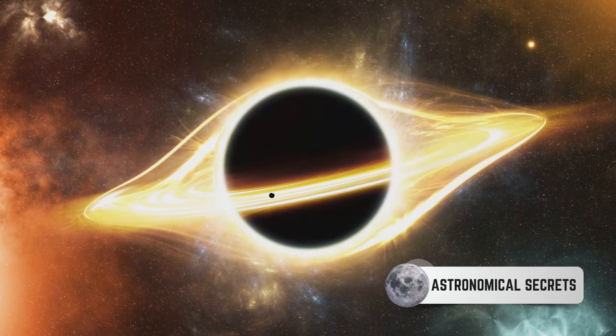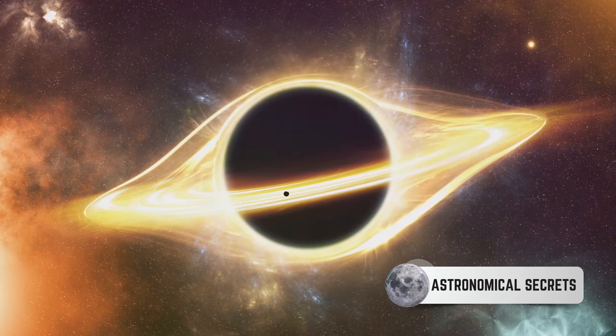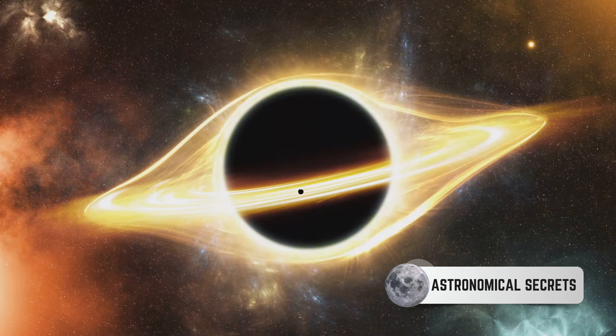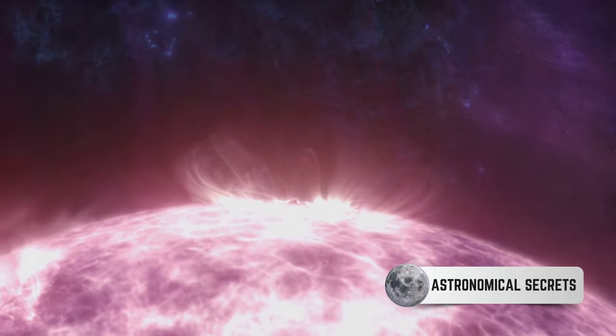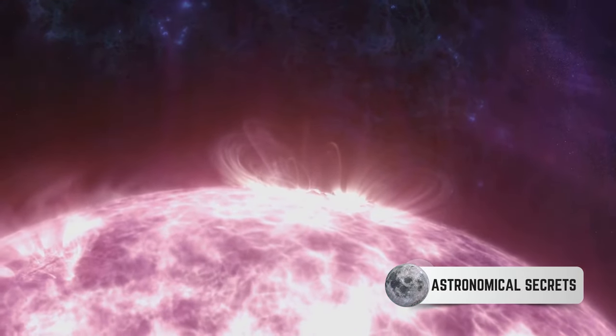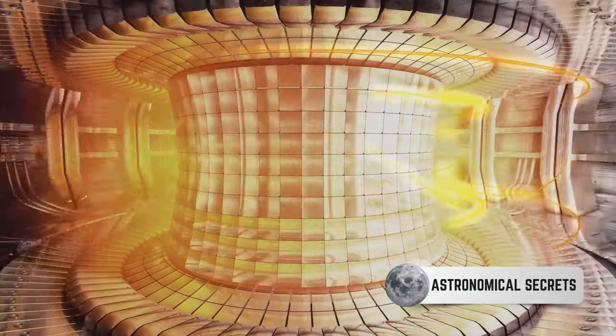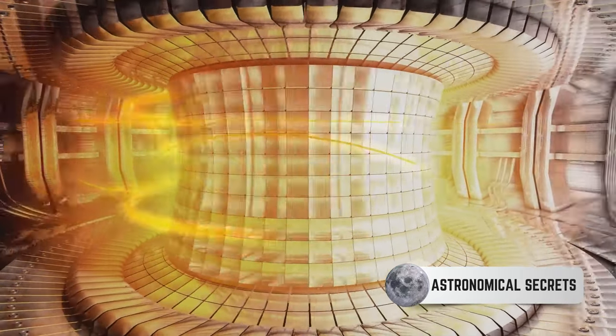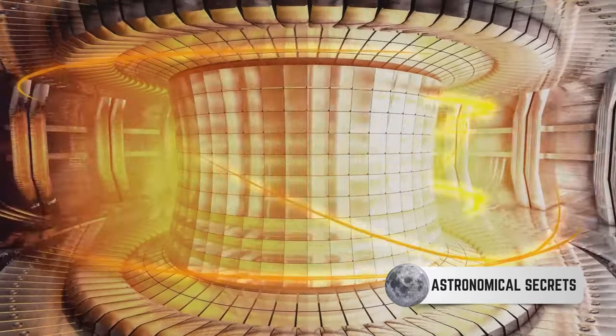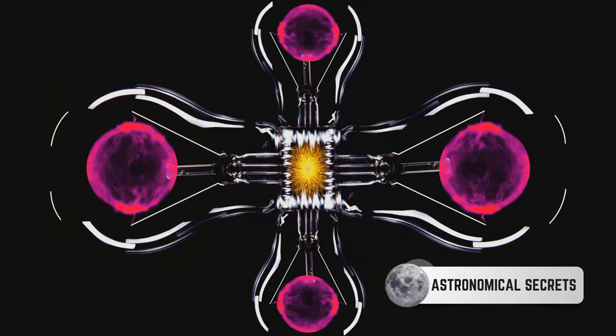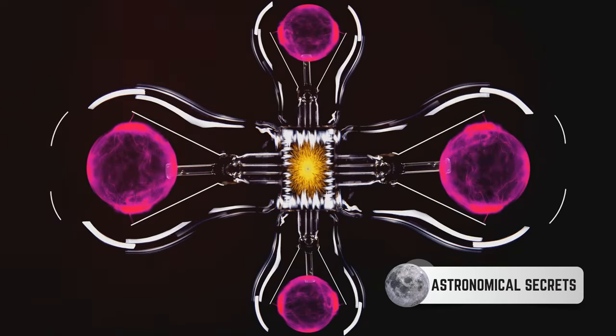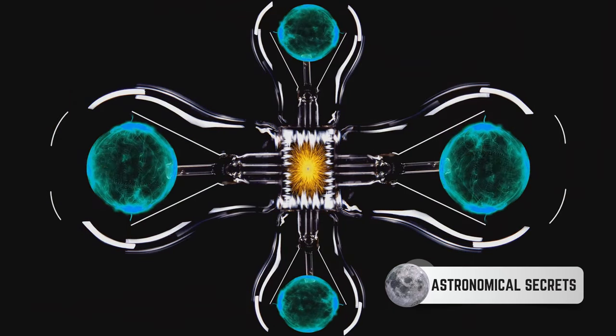For a star to evolve into a Wolf-Rayet star, it must be massive, at least 20 times the mass of our sun. These stellar giants burn through their nuclear fuel at a staggering rate, leading to a short and dramatic lifespan. The core of such a star is a cauldron of nuclear fusion, converting lighter elements like hydrogen and helium into heavier ones like carbon and oxygen. As the star ages, it expands into a red supergiant, a phase marked by intense stellar winds.